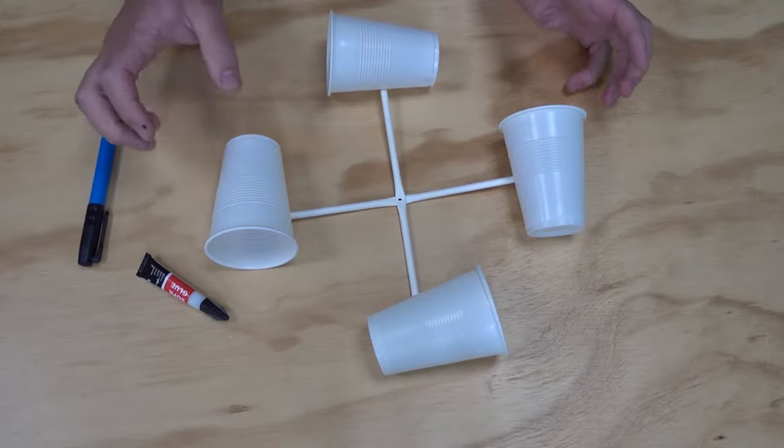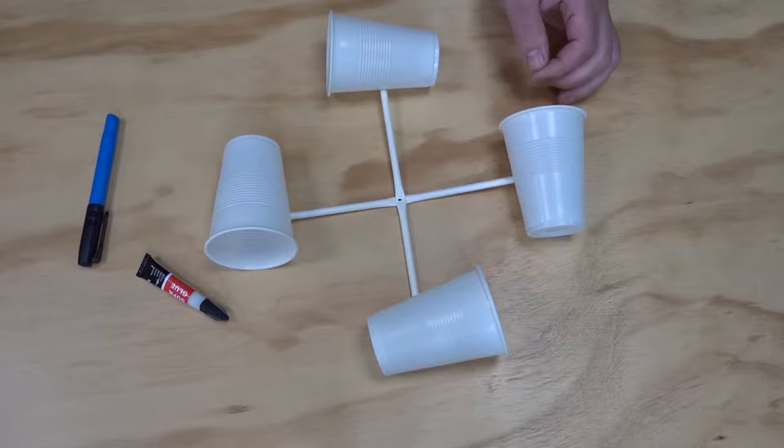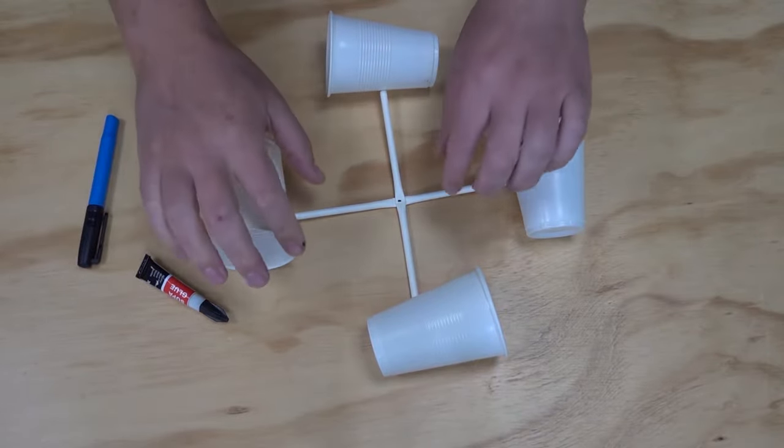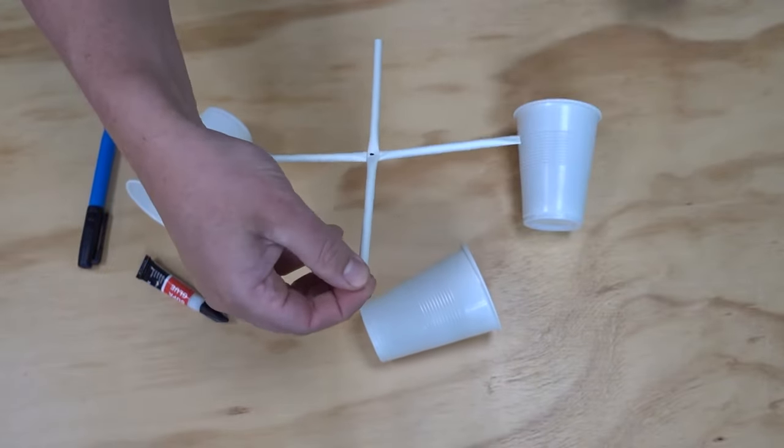You want to make sure that they're stuck on really well because if this is going to be in the wind we don't want one of the cups coming flying off as it's spinning around. So make sure you use plenty of tape to stick them on. Another thing that can help with this is slightly squashing the end of each straw so they're a little bit flatter and giving you a little bit more surface area.